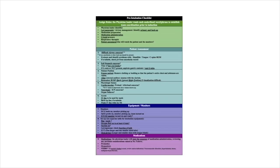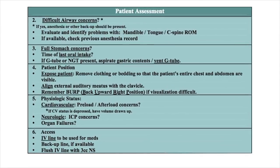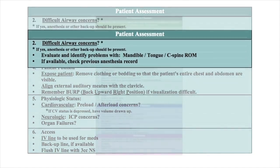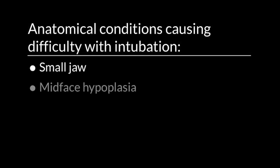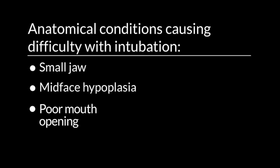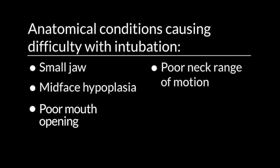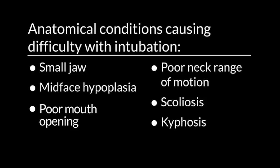The second part of the checklist is the patient assessment. First, are there any difficult airway concerns? Does this patient have any anatomical problems that might make us worried about a difficult intubation? Does the patient have a small jaw, mid-face hypoplasia, poor mouth opening, poor range of motion? Is the patient scoliotic? Is there kyphosis? Or any other structural or skeletal abnormalities that might alert us to a difficult airway?